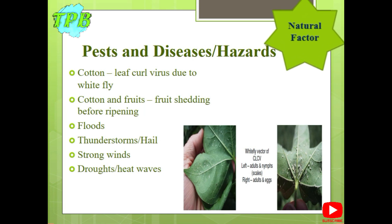Another natural factor is pests and diseases. One crop highly affected by several pests and diseases is cotton. Cotton is adversely affected by leaf curl virus due to whitefly. Another common problem is fruit shedding virus — when plants are affected by this virus, the fruit falls before fruition takes place, meaning the fruit will not ripen, there will be no harvest, leaving the farmer at a total loss.